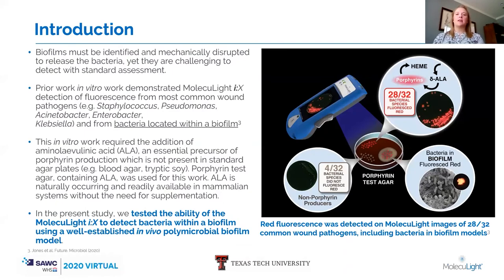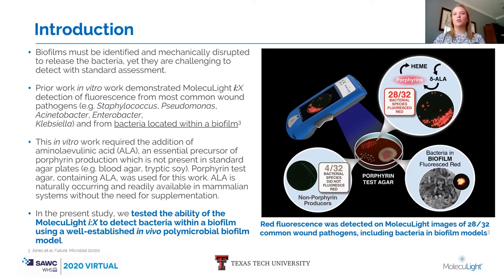Previous work has described the ability of the Moleculite device to detect bacteria encased within an in vitro polymicrobial biofilm. To do this, we used our established in vitro polymicrobial biofilm model containing a one-to-one-to-one ratio of Staph aureus, E. coli, and Enterobacter cloacae. One important factor in this work is the supplementation of aminolevulinic acid, a required precursor for the end-product porphyrins, which will fluoresce under certain wavelengths of light and is then detectable with the Moleculite device.